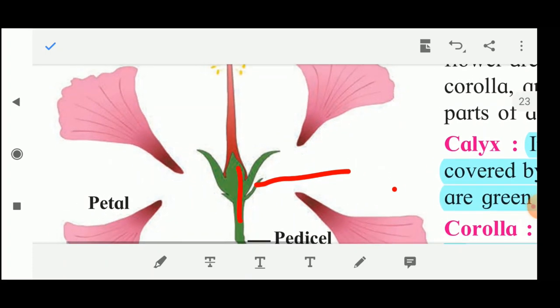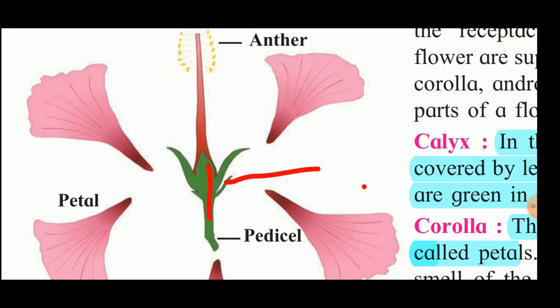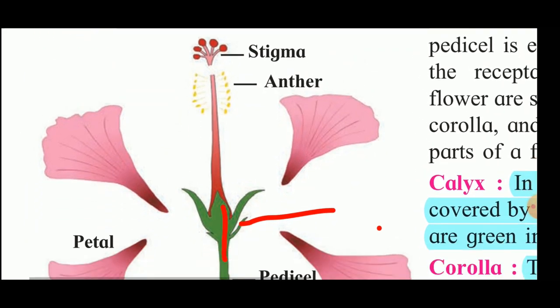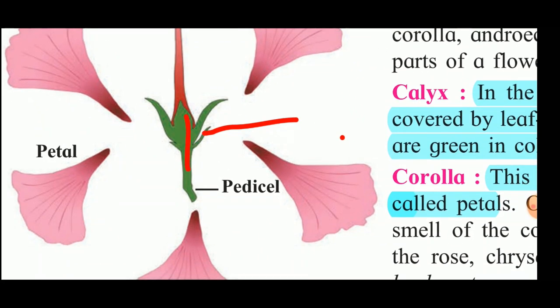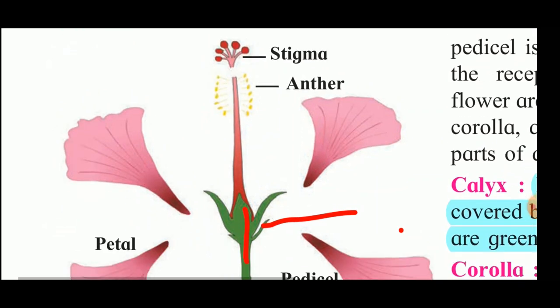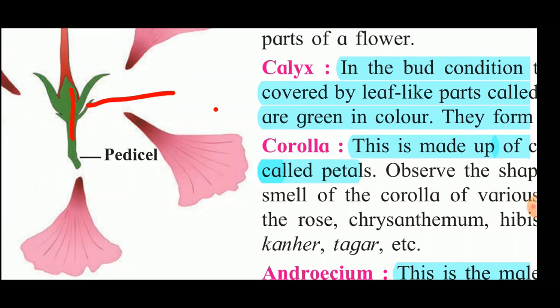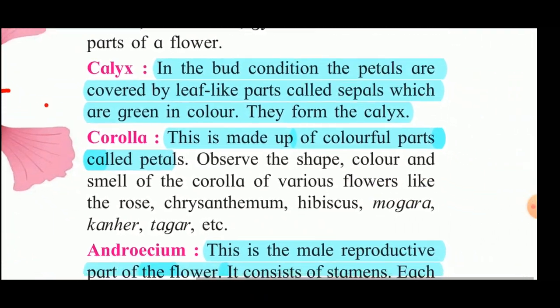The calyx is the green part of the flower in which the bud is covered. Then the colourful part of the flower is called the corolla. Then there is the androecium, and inside that the gynoecium is there.